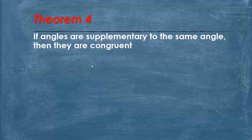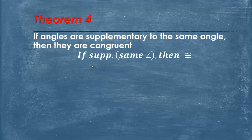Theorem 4 states that if angles are supplementary to the same angle, then they are congruent. The short way of writing this is: if supplementary, same angle, then congruent. Much shorter way of writing it for you.